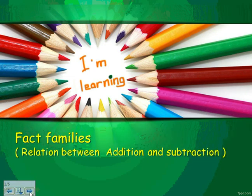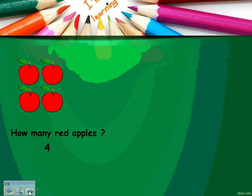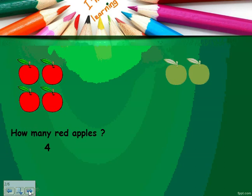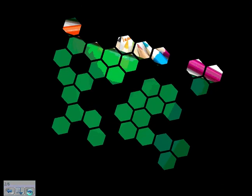Our new lesson is fact family. Can you tell me how many red apples we have here? Let's count together: one, two, three, and four. Excellent, there are four red apples. How many green apples do we have? One, two, three, four, and five. Excellent, there are five green apples. Four plus five equals what? Yes, four plus five equals nine.